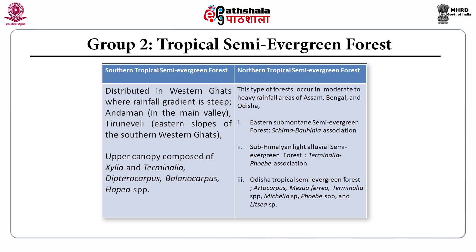Comparing the southern and northern types of tropical semi-evergreen forests: the southern type is found in the Western Ghats, with the upper canopy composed of Terminalia, Dipterocarpus, Balanocarpus, and Hopea. The northern tropical semi-evergreen forests are found in high rainfall areas of Assam, Bengal, and Odisha. Eastern sub-montane semi-evergreen forests have Schima and Bauhinia associations. Sub-Himalayan light alluvial semi-evergreen forests have Terminalia. Odisha tropical semi-evergreen forests show predominance of Artocarpus, Mesoferia, and Terminalia species.